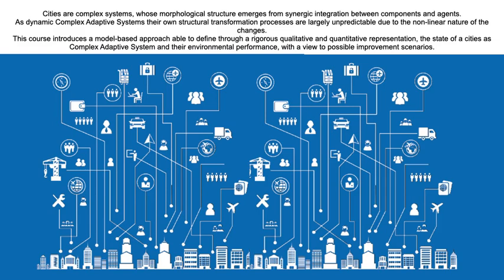Cities are complex systems whose morphological structure emerges from the synergic integration between components and agents. As dynamic complex adaptive systems, their own structural transformation processes are largely unpredictable due to the non-linear nature of the changes. Data Modeling for Urban Performance introduces a model-based approach able to define, through qualitative and quantitative representation, the state of a city as a complex adaptive system and its environmental performance process with a view to possible improvement scenarios.